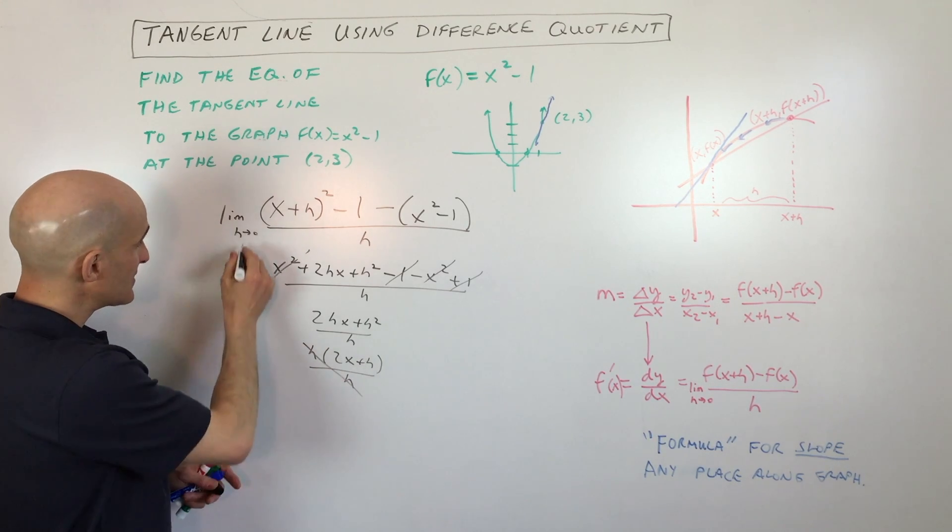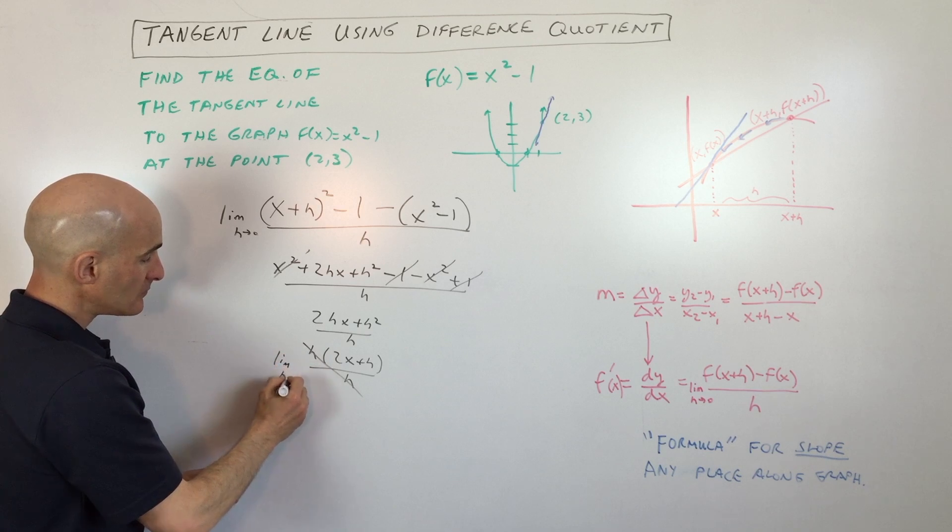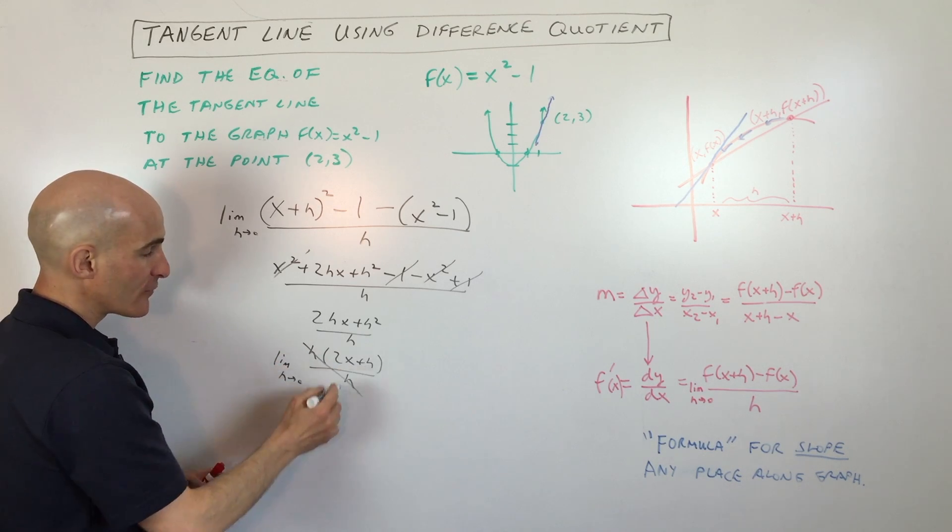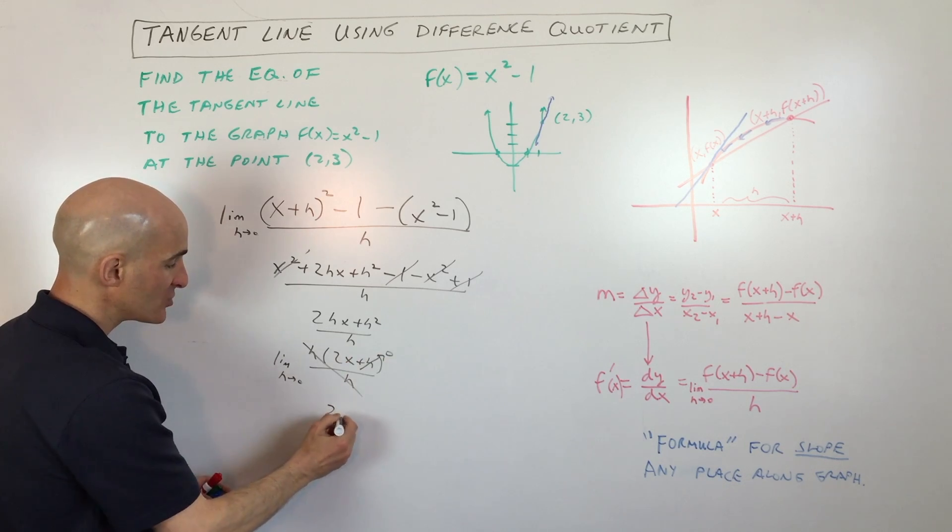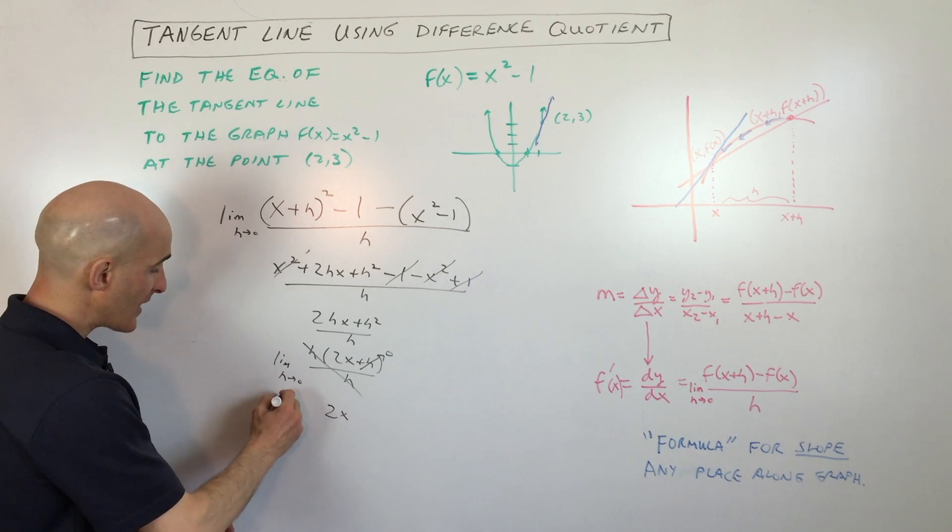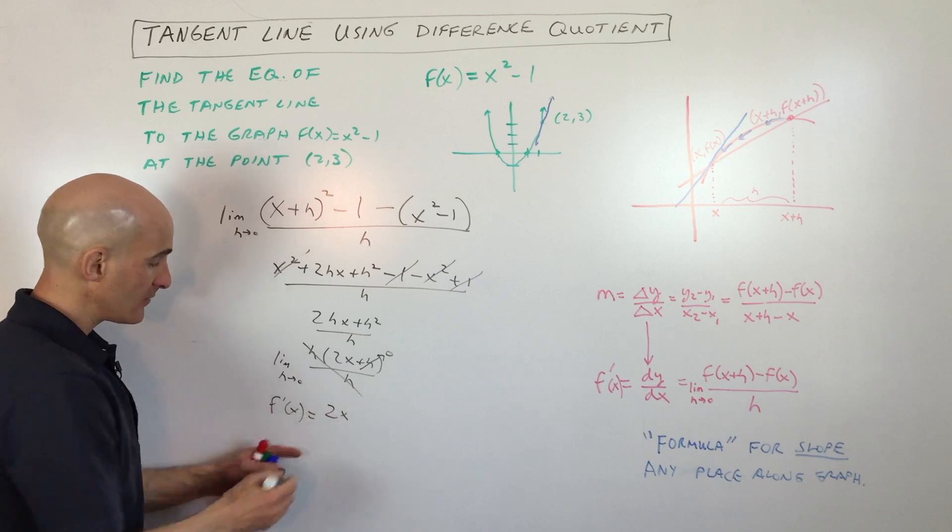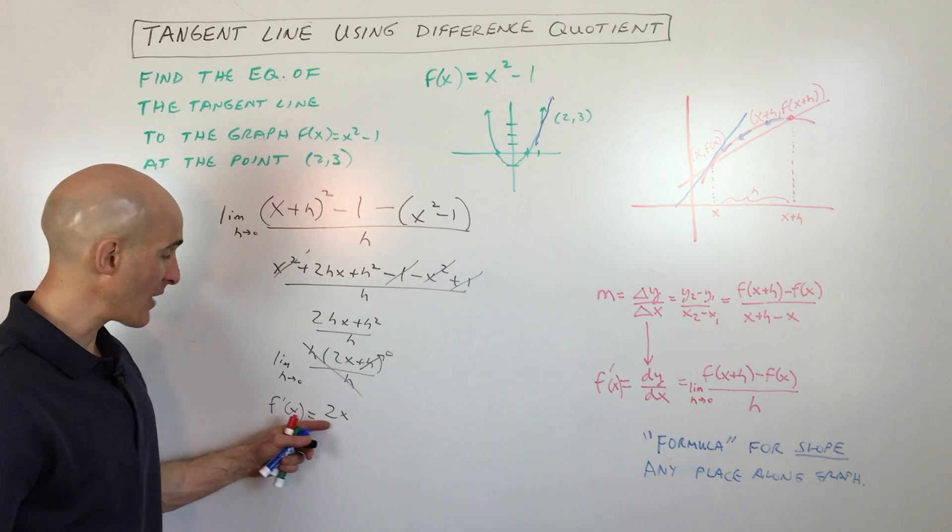Now remember this is a limit as h approaches zero. So if we put zero in for h, this is going to zero. We're just left with 2x. So 2x is our formula for our derivative. f'(x) = 2x.